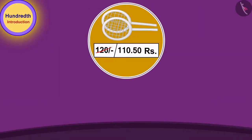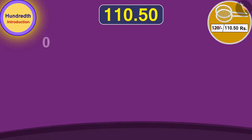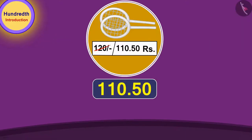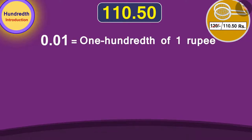We can write one hundredth part of any number using a decimal point as zero point zero one. The price of the badminton racket is one hundred and ten point five zero rupees. Zero point zero one rupee, or one hundredth of a rupee, is equal to one paise.